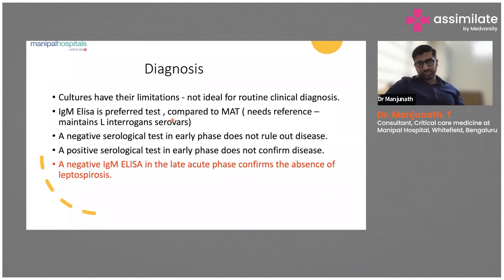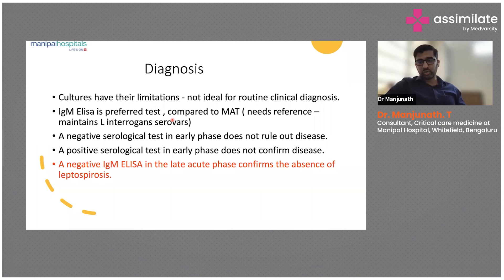Doing all these tests is not ideal for routine clinical diagnosis. A negative serological test in the early phase does not rule out the disease — if the patient is still clinically sick with impending organ failure, be broad enough to start doxycycline, chloramphenicol, azithromycin, or ceftriaxone and treat the patient unless totally ruled out. Always treat them as water-borne tropical infections.